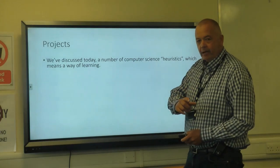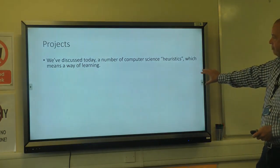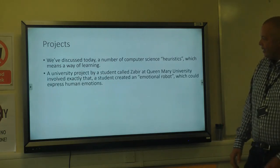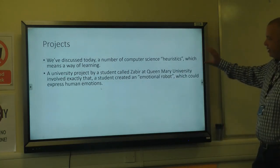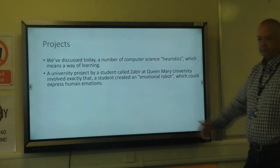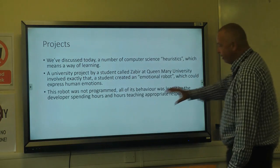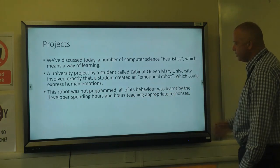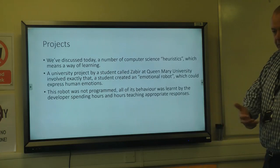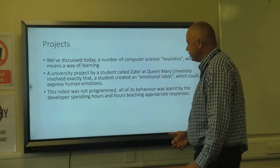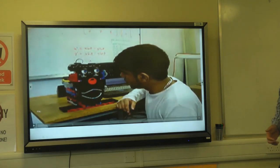I'll show you a brief video. I've given you a few computer science heuristics. There was a university project by a student called Zabir at Queen Mary University, who created an emotional robot. All of the robot's behaviour was learned — the developers spent hours teaching it appropriate responses. That's machine learning: the machine copies what you do, you tell it if it's right or wrong, and eventually it gets things right.